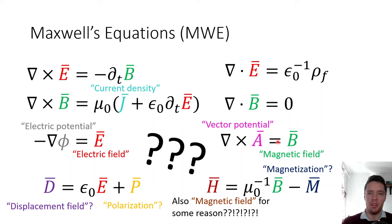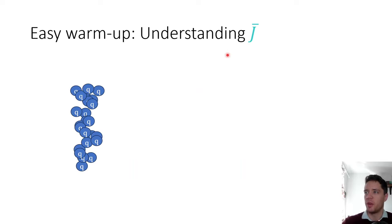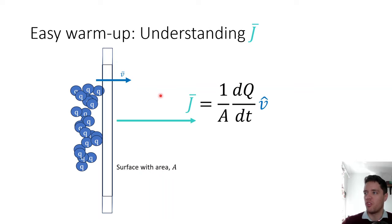So if you're a little bit confused by all these fields, don't worry — we're going to go through them one by one and show intuitively how they work. First, let's consider the simple case of the J field. This current quantity simply arises when you have a collection of charges moving through a region with a surface area A in some direction. J is simply the number of charges passing through the region per second divided by the area, oriented in the correct direction.